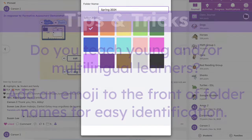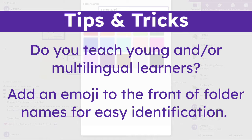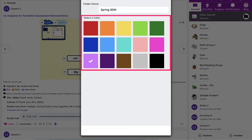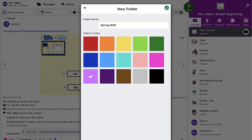If you teach our youngest learners or multilingual learners, one great trick is to add an emoji before the name of the folder so students can easily find them. Choose a color for your folder and then tap the green check to save.